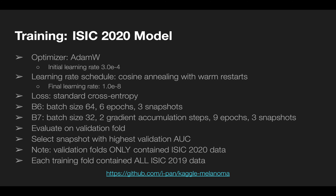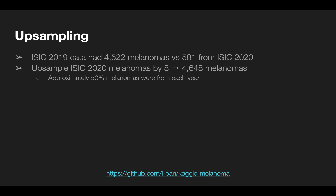I combined the ISIC 2019 and ISIC 2020 data for training, but validated only on the 2020 data. I used a cosine annealing learning rate scheduler with warm restarts to reduce the chances of falling into a local minimum. I up-sampled the ISIC 2020 melanomas by a factor of 8 so that there would be about an equal number of melanomas from both 2019 and 2020 data.